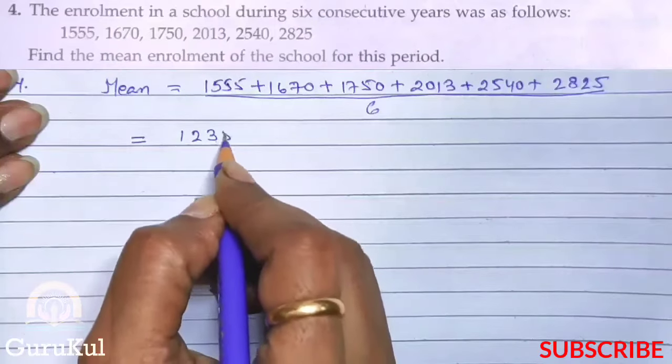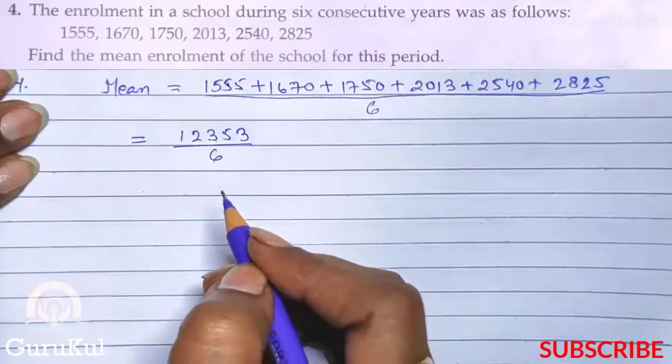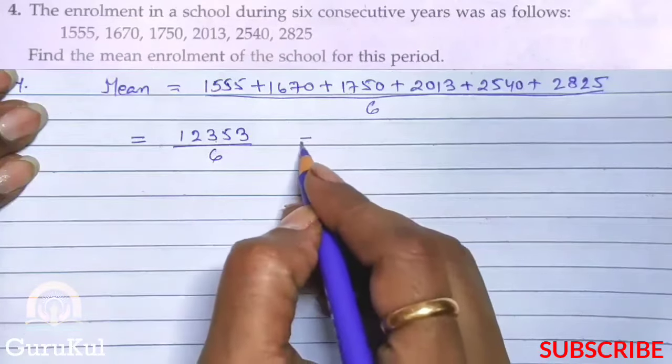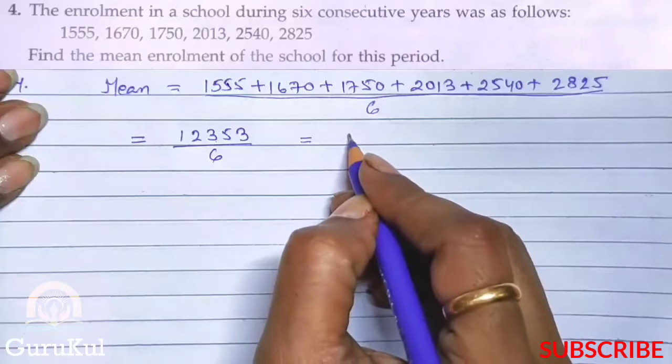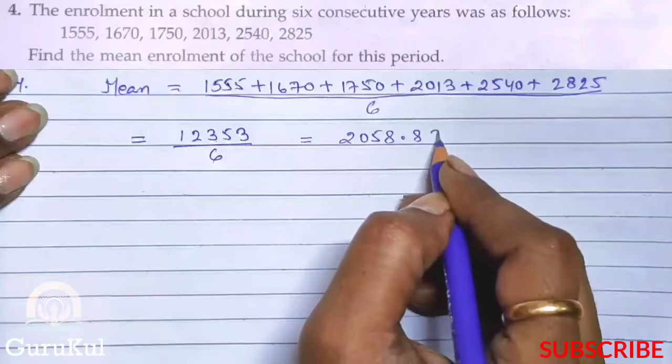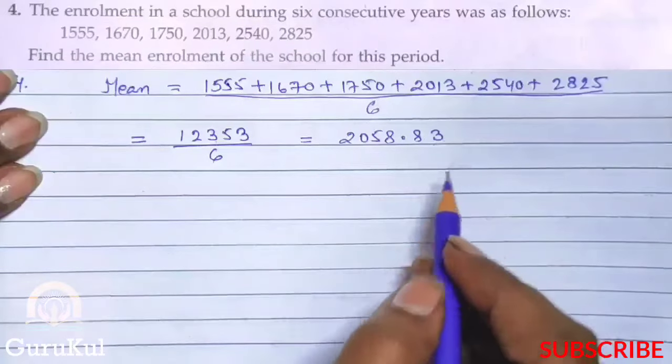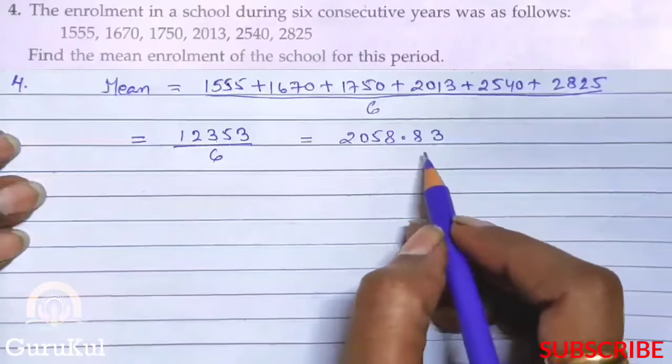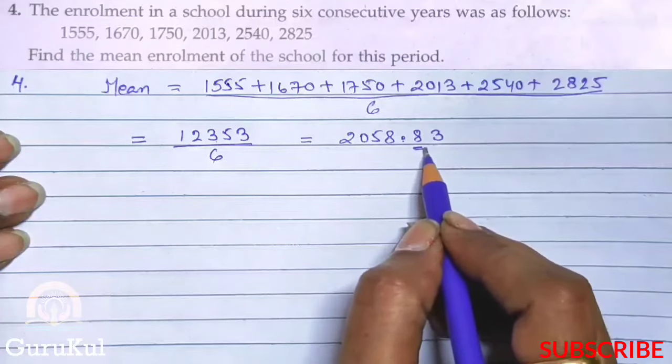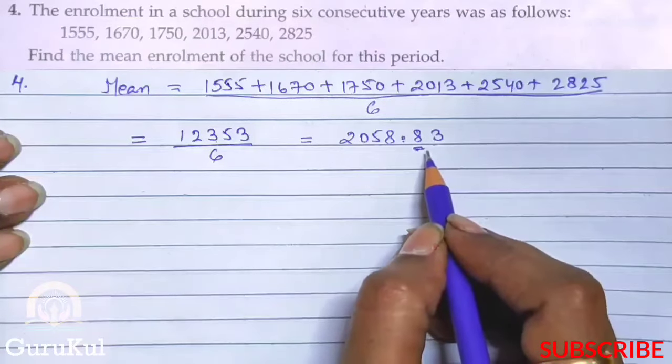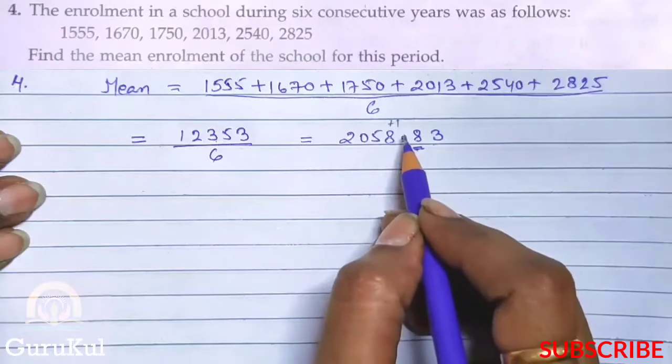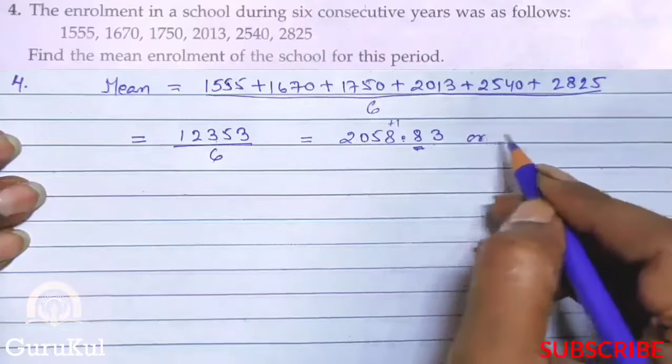So after adding this our answer came 12,353 divided by 6. So this is not reduced properly, so this is why we will divide it and our answer came in decimal: 2058.83. Now how do we write this? Look here, this is the decimal. This is the first number 8. This is more than 5, right? So what will we do? We will give the number plus 1, and how do we write it?